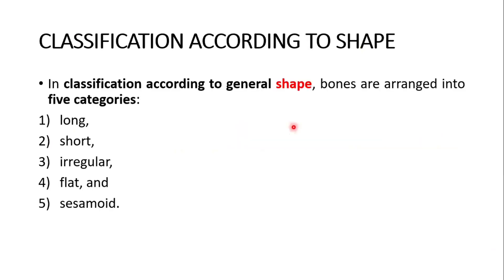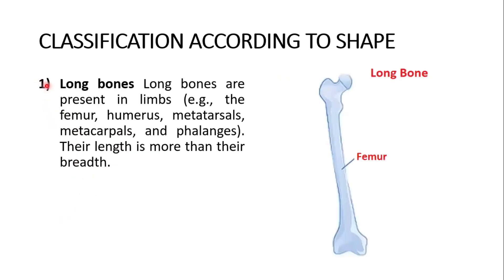The classification according to shape is very, very important. According to general shape, bones are arranged into five main categories: long bone, short bone, irregular bone, flat bone, and sesamoid bone. Long bones are present in the limbs — for example, the femur, humerus, metatarsals, metacarpals, and phalanges.